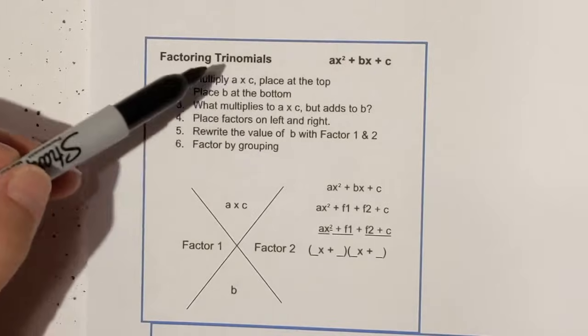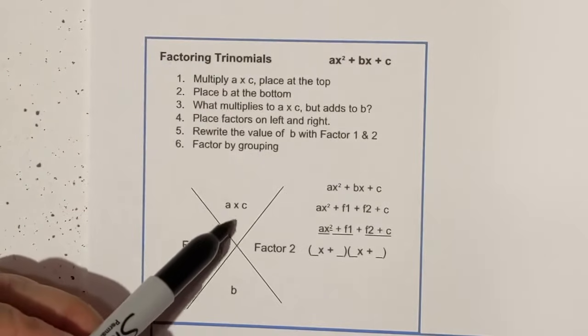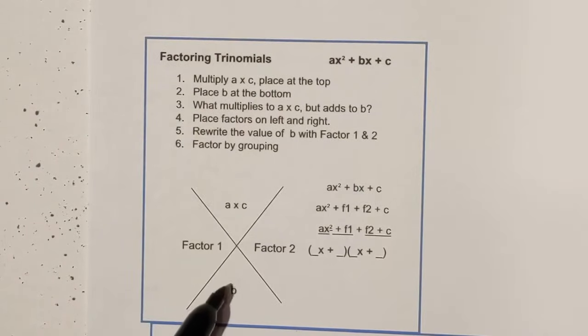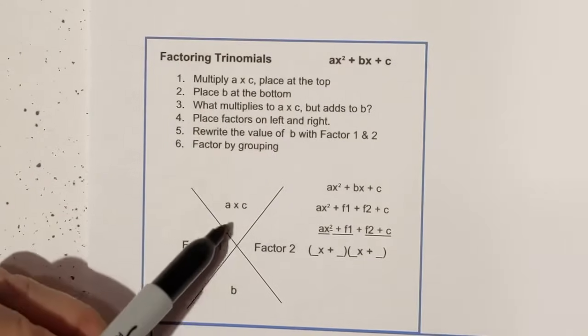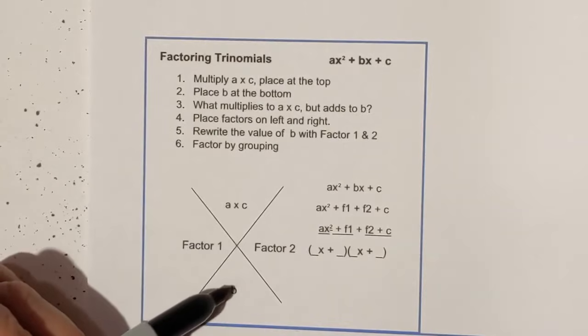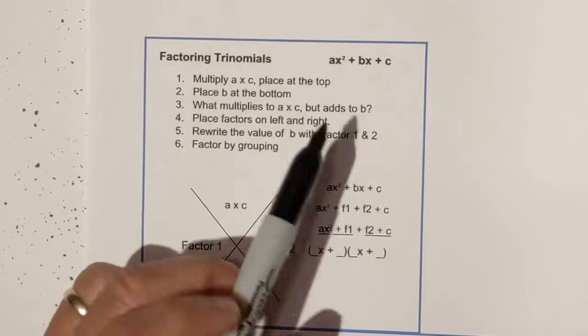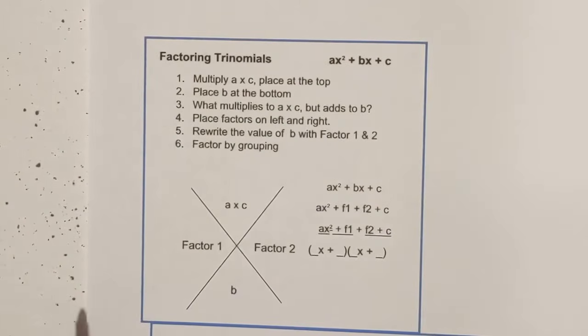First, multiply a times c and write this number here, then place b at the bottom. Ask yourself: what multiplies to a times c but adds to b? Then rewrite the value of b with factors 1 and 2, and factor by grouping. Quite a few steps, but I think you'll find it really makes it pretty easy.